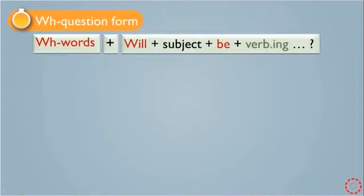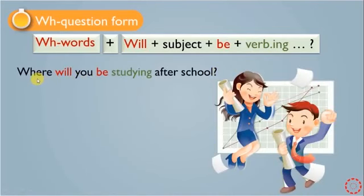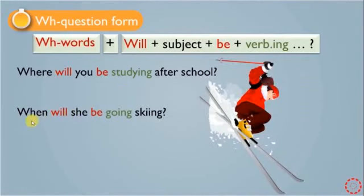We also have the WH-question form. We put the WH-question word at the very beginning of the sentence, before 'will', and then we have 'will', followed by the subject, then 'be' plus verb+ing. For example: 'Where will you be studying after school?' — the WH-word is 'where'. Another example: 'When will she be going skiing?' — 'when' is the WH-question word, followed by 'will', the subject, then 'be' plus verb+ing.